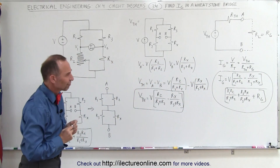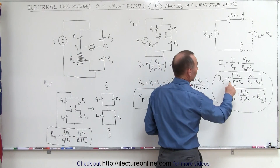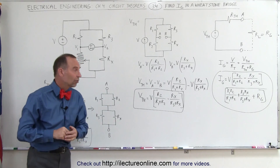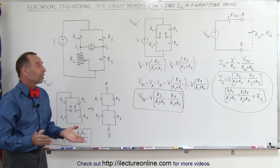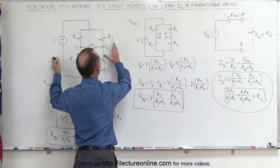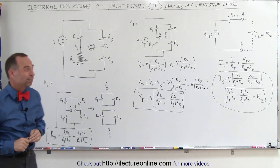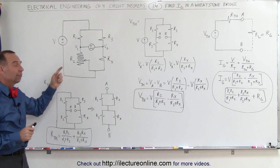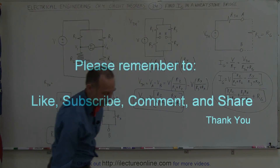Of course, that equation looks complicated, but it's actually straightforward. All we need to do is find the values of the source voltage, the various resistances, and the galvanometer resistance, then plug them in to get the current. We arrived at this by using the Thevenin equivalent circuit, which makes it much easier than any other method. This is definitely the preferred method.